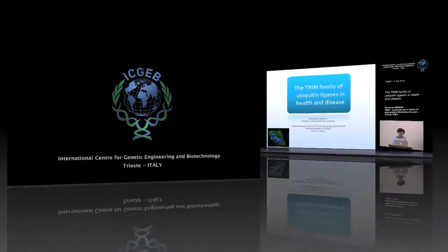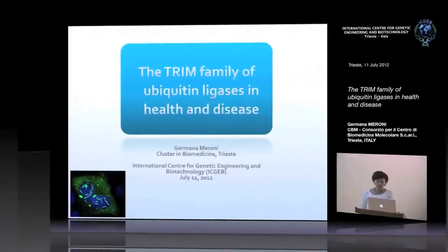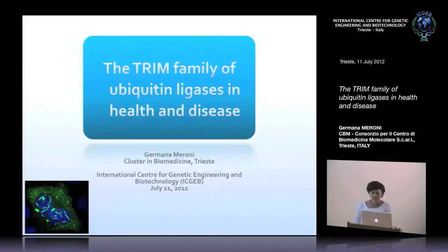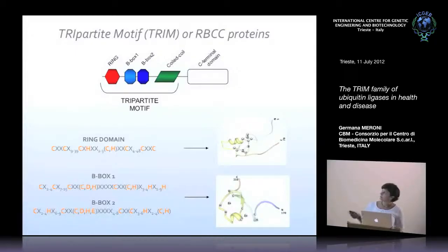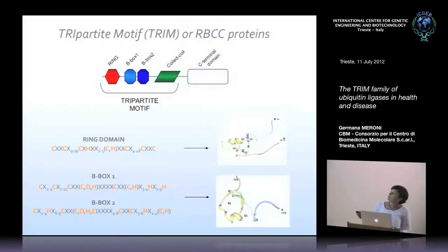I will try to illustrate what we have been doing on the Trim family in my lab since a while. The Trim genes encode for proteins that share this tripartite motif at the N-terminus of the protein. The tripartite motif is composed of a ring domain, one or two B-box domains, and the coiled-coil region. It is also named RBCC for this class of proteins.